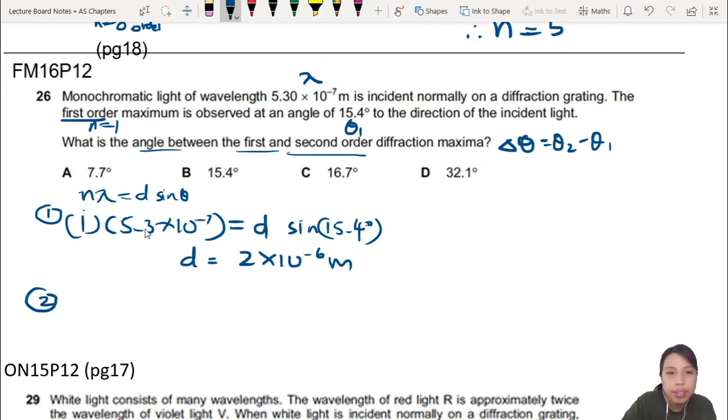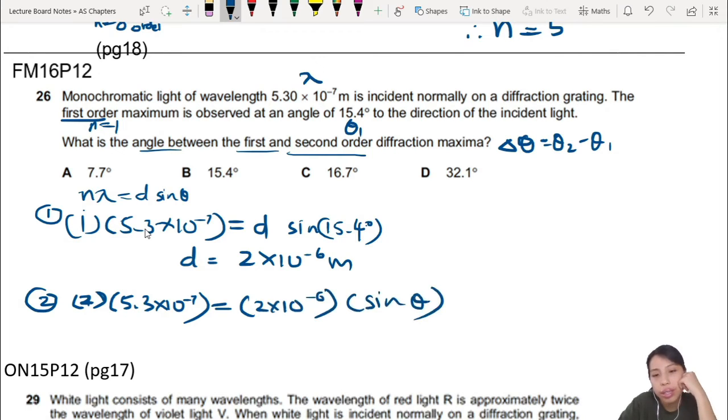Then you do your second case. The second order. So what will be the second order angle? Second order would be 2 lambda, same light, so same wavelength, equals to, now we know d. So d is 2 times 10 negative 6, but we don't know the angle. So we will sin theta 2. So now you need to find your theta. You remember how to do trig? Make sure your calculator is in degree or radiance mode. Degree, because the answers are in degree. So make sure you calculate theta properly. You should get 32 degrees for your second order angle.